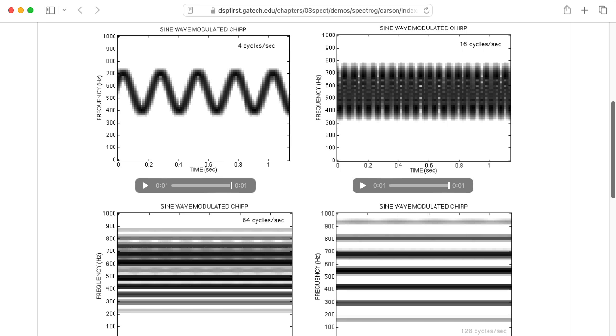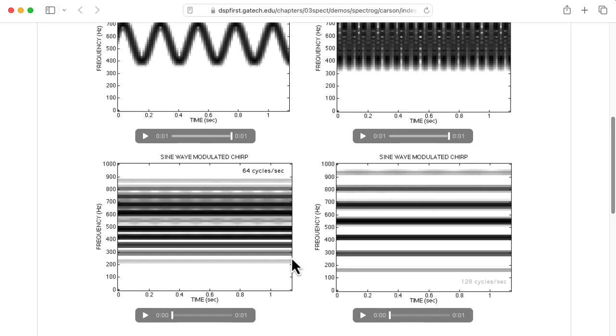Now we're going to increase the frequency of modulation by a factor of four again. Oh, now we don't hear that distinct variation. Something very strange is going on. Notice that on the spectrogram, you see some content beyond that 400 to 700 range we saw earlier.